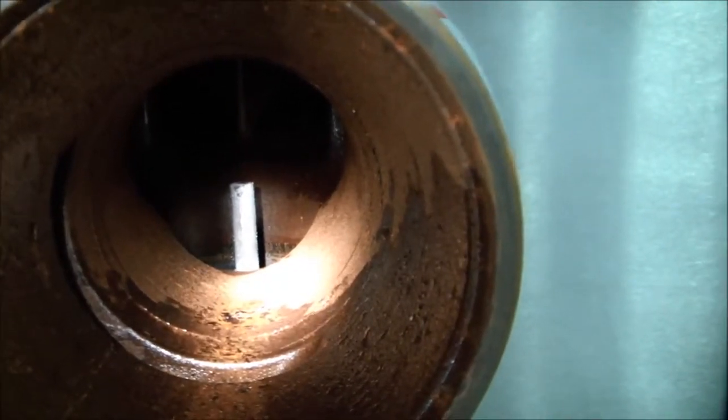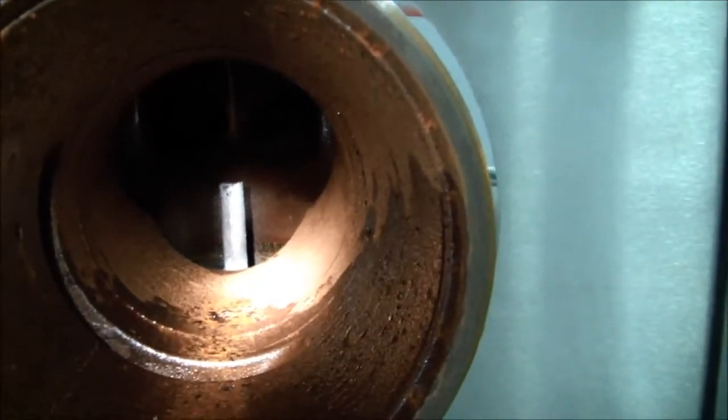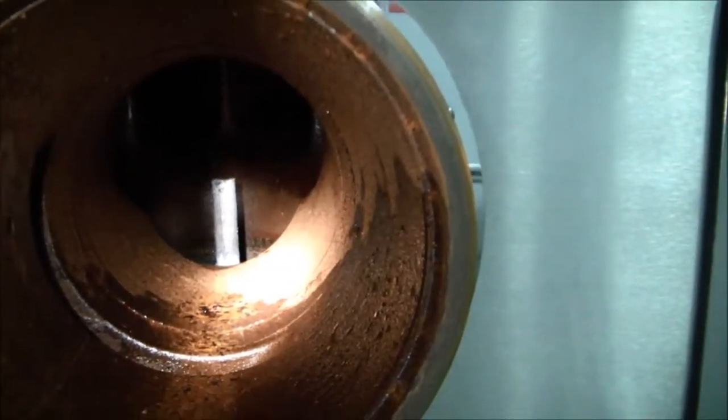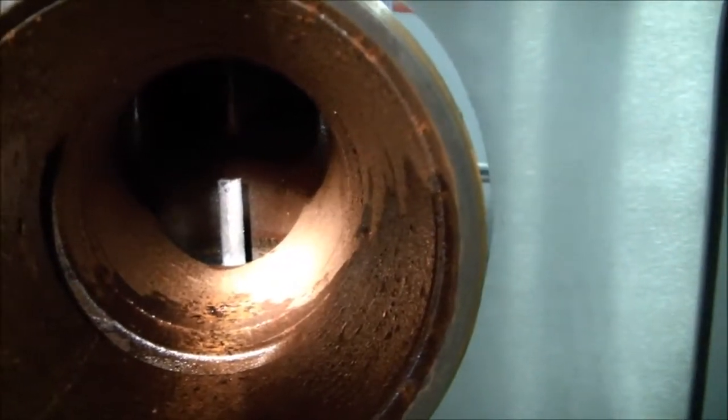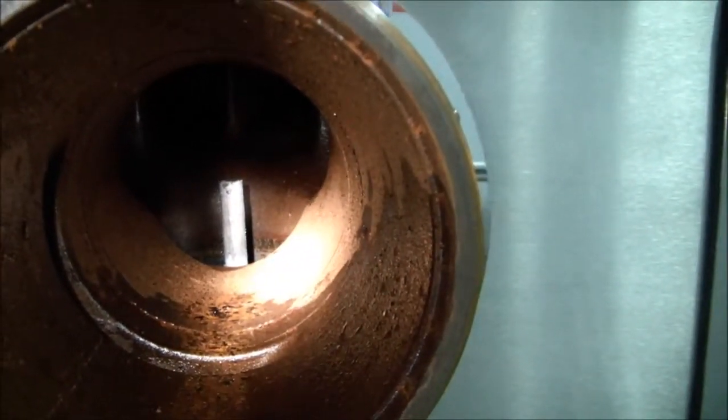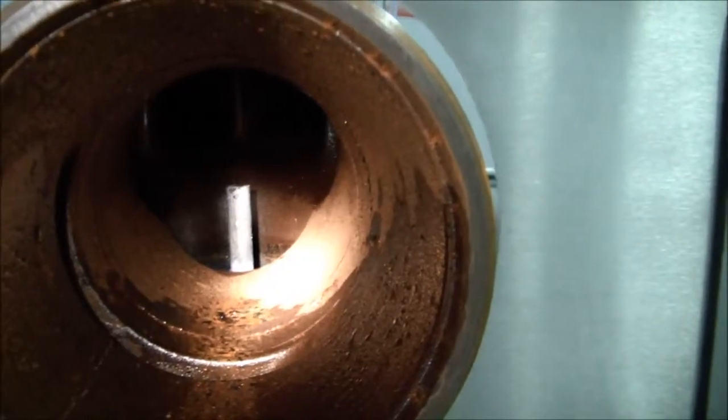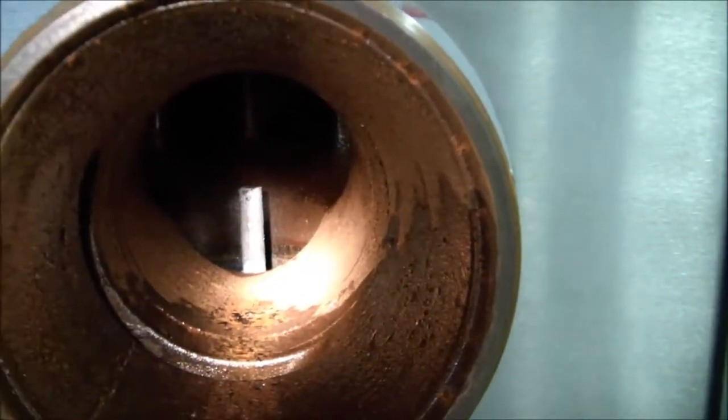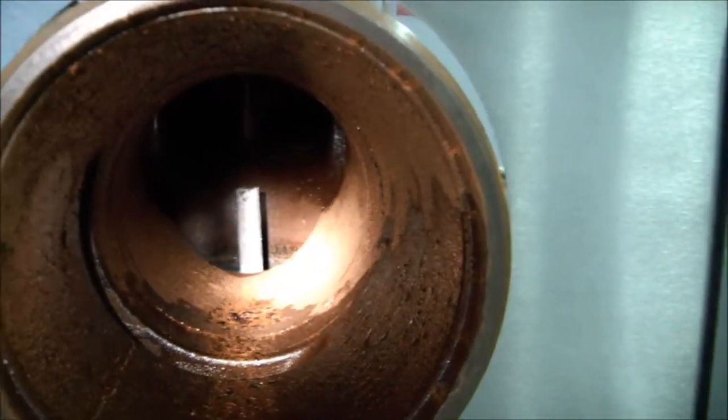you would need to remove the anode and you do so by getting underneath the pump at that suction flange with a one and one sixteenth inch socket and a ratchet. You can back out that anode for replacement. I'll show you how to do that here now.